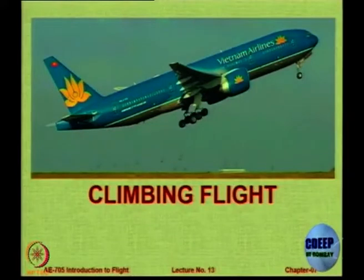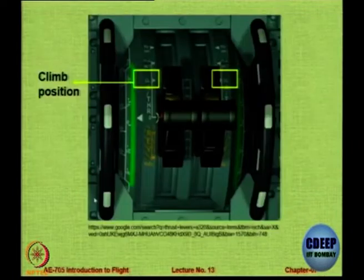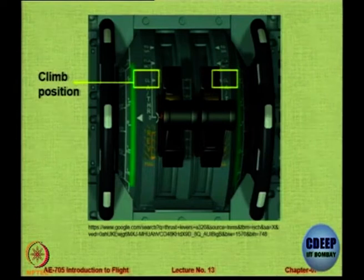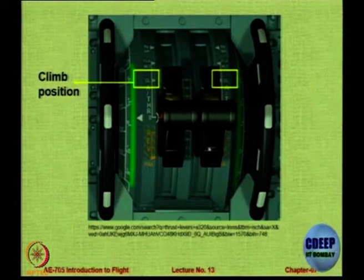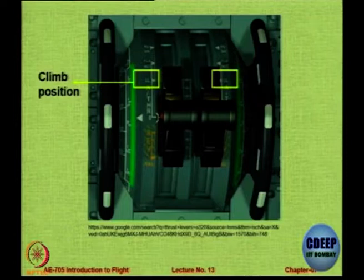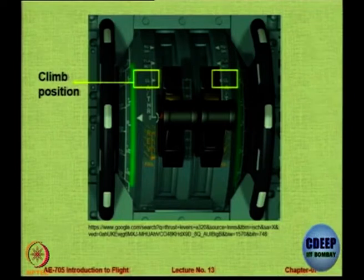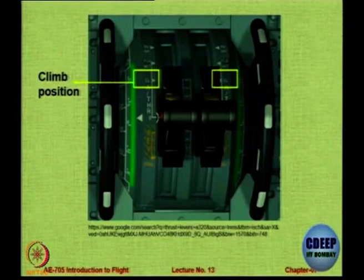So much about gliding, now let us go to climbing. Climbing flight is a flight where the throttle of the aircraft has a position called the climb position. Just to give you some idea, the two on the right and the left are the trimming wheels used to trim the aircraft so the pilot can fly hands-free. These are the trim tabs to ensure that the net moment is zero. These two are the throttles — you can see there is a reverse position marked in yellow, then you have climb position, then cruise position, and so on.